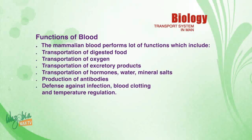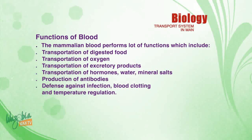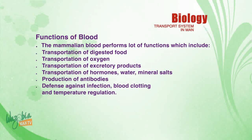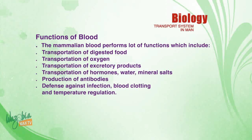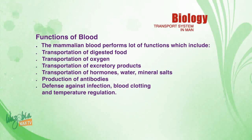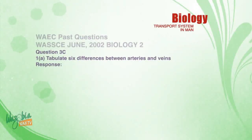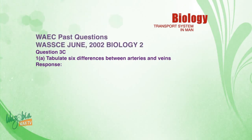Welcome back. Now let's discuss the functions of blood. Mammalian blood performs many functions, including: transportation of digested food, transportation of oxygen, transport of respiratory products, transport of hormones, water, and mineral salts, production of antibodies, defense against infection, blood clotting, and temperature regulation.